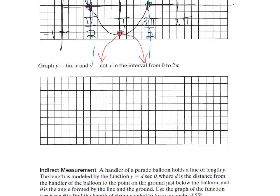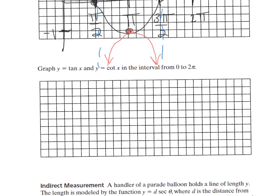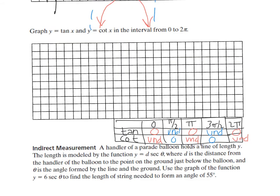Now we do the same thing with tangent and cotangent. I'm going to make a table of values for tangent, and make a scale from 0 to 2 pi: pi over 2, pi, 3 pi over 2, and 2 pi. The tangent function is graphed using asymptotes — the asymptotes for tangent are at pi over 2 and 3 pi over 2.